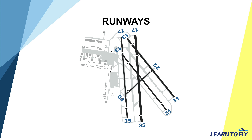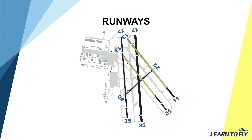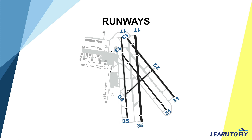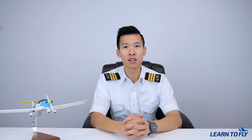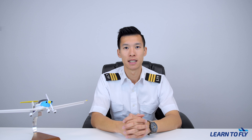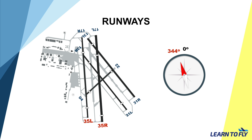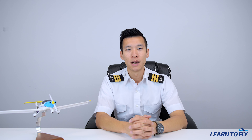This is the Moorabbin Aerodrome chart. You can see the location of all of the aprons and the runway layout, and this is where Learn to Fly's apron is. Most of our aircraft are parked here. After we have started up, we will be taxiing to the Run-Up Bay — the Northern Run-Up Bay is located here, and the Southern Run-Up Bay is located here. Moorabbin Airport has five runways in all kinds of directions for all directions of wind. It consists of 17, 35, 13, 31, 04, and 22. 17 and 35 are parallel runways, same as the 13 and 31 pairing, and that is why they need to be identified as a left or right runway.